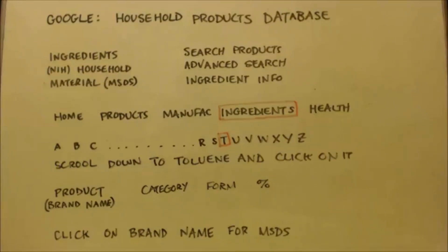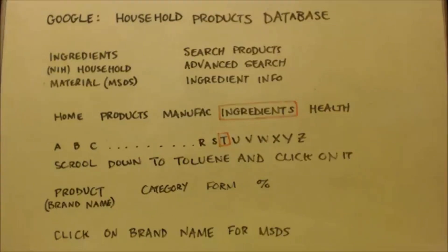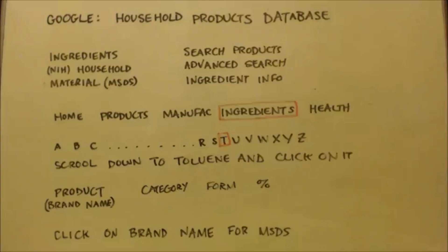It's going to be a short video just showing you how, if you're looking for a certain chemical, how do you find it in a product. First thing you do is look up on top here — it says 'Google Household Products Database.' Punch that into Google and what will happen is it'll probably be the second or the first option. You'll know it's the option by looking at the second group of stuff.